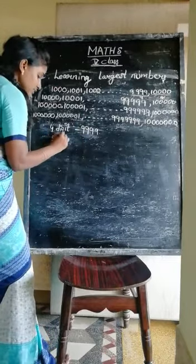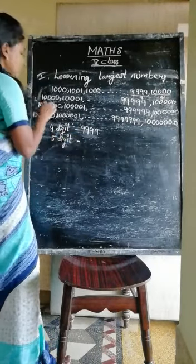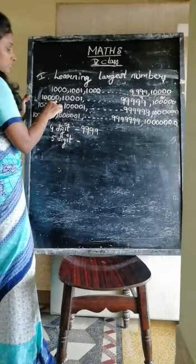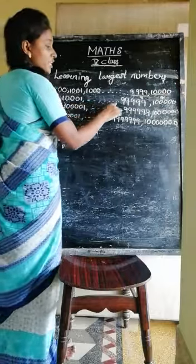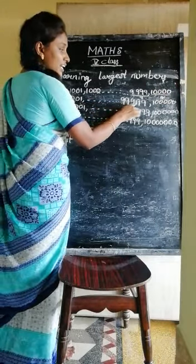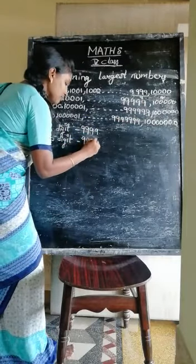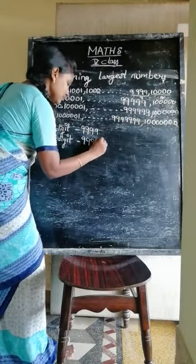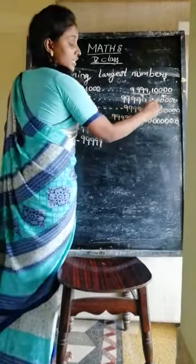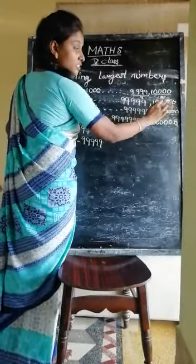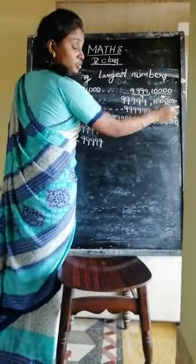And again, 5 digits. Here we are having 10,000, 10,001 and so on up to 99,999. That is the largest number in 5 digits. After 99,999 we go to 6 digits, but that is not countable as a 5-digit number.